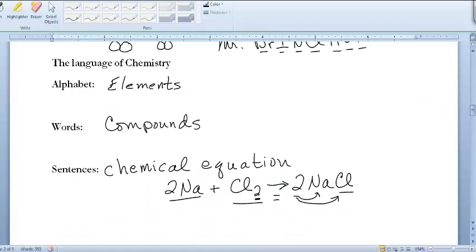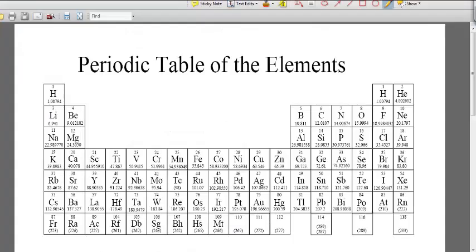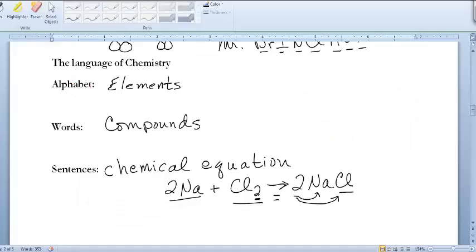Let's review those seven diatomics once again. We have hydrogen, and then we draw the number seven on the periodic table to identify the other diatomics: nitrogen, oxygen, fluorine, chlorine, bromine, and iodine. Those are our seven diatomic elements.